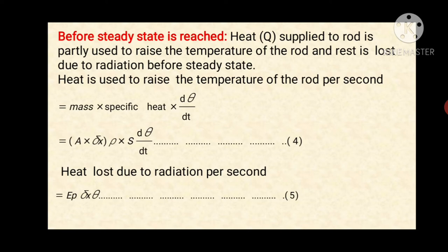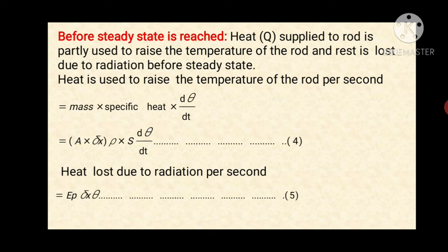Now we will see what happens before steady state is reached. Heat Q is supplied to the rod. This amount of heat is partly used to raise the temperature of the rod, and the rest is lost due to radiation before steady state. The heat used to raise the temperature of the rod per second is given by mass times specific heat times dθ/dt, which equals A·Δx·ρ·s·(dθ/dt), where A is the area of cross-section, Δx is the length, ρ is the density, and s is the specific heat.